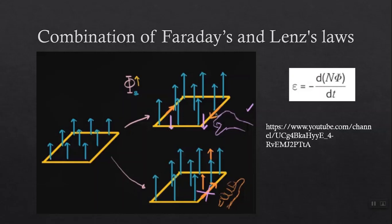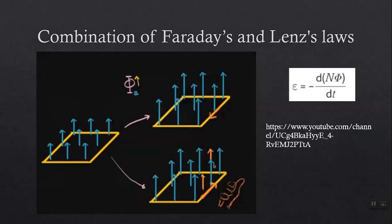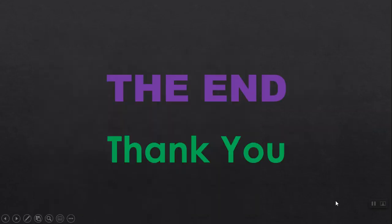That is why earlier we observed: when the north pole was entering, current moved in one direction; when the south pole entered, current moved in the opposite direction; when the north pole was leaving, current moved in the opposite direction. Those observations were all because of Lenz's law, and that is why the negative sign is present in Faraday's equation. Thank you for listening, children. I hope you understood the second part of this lesson.